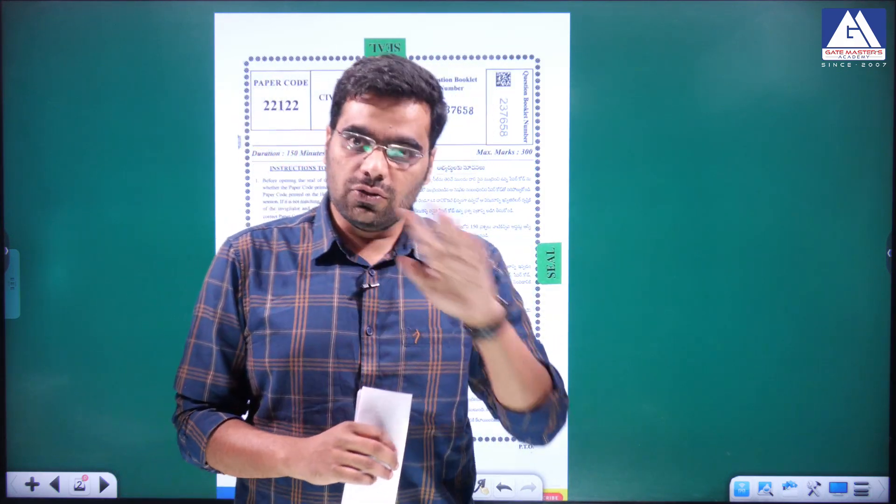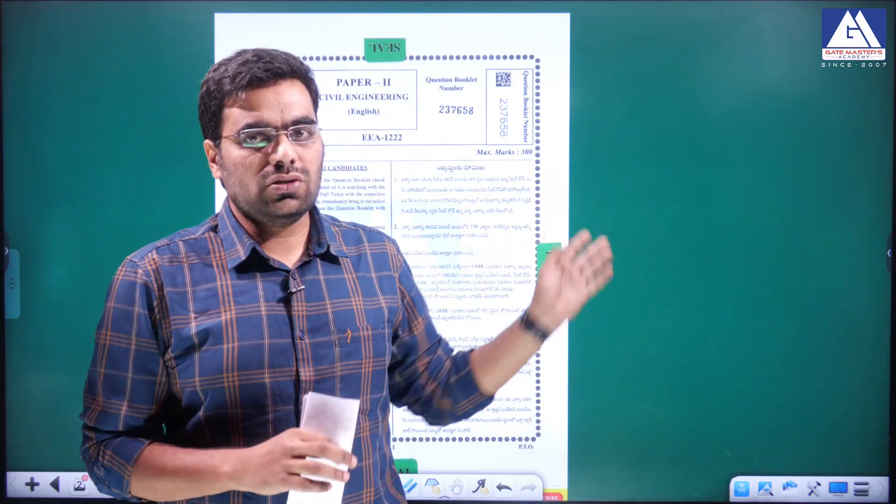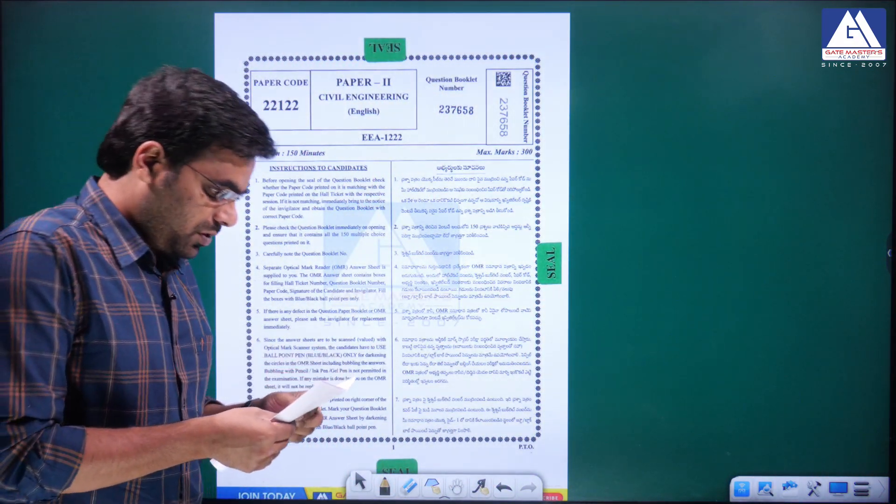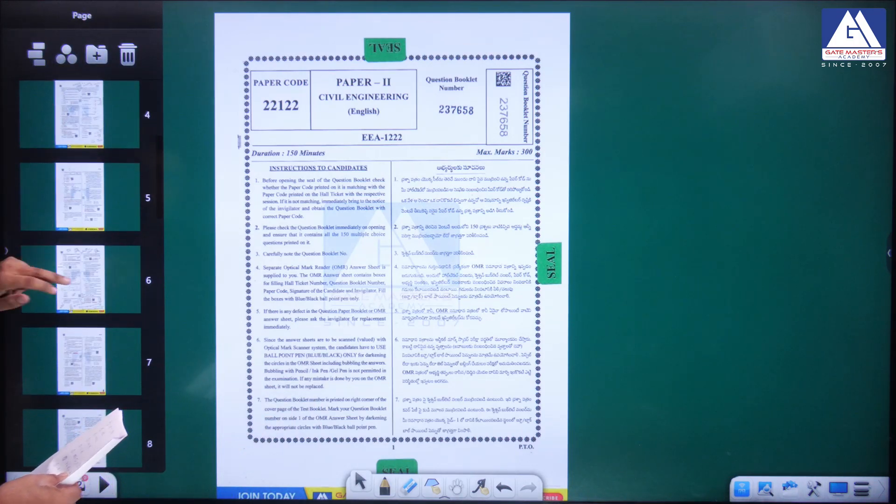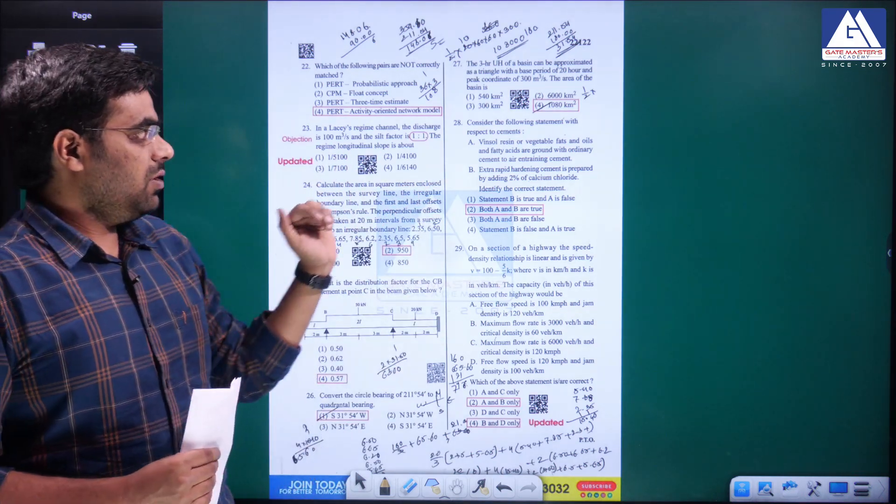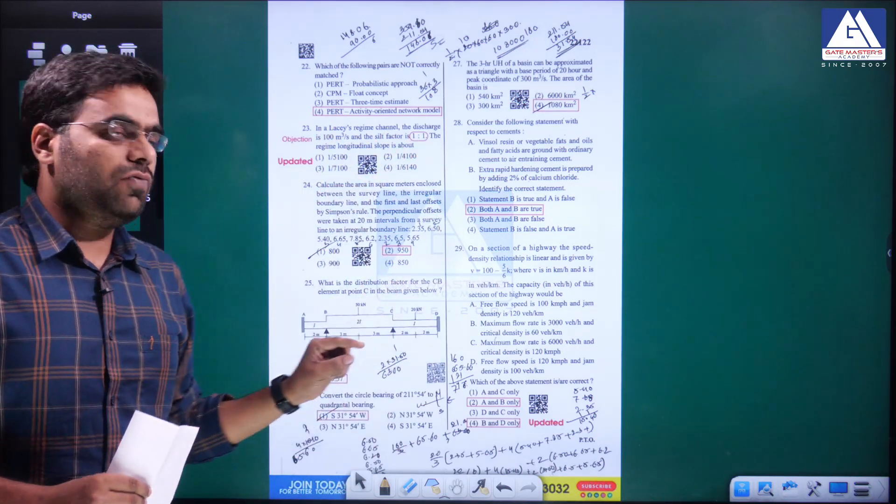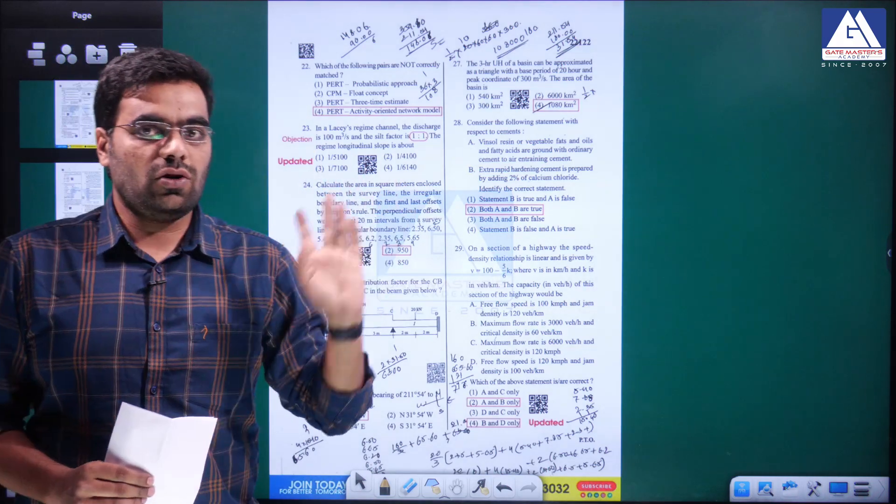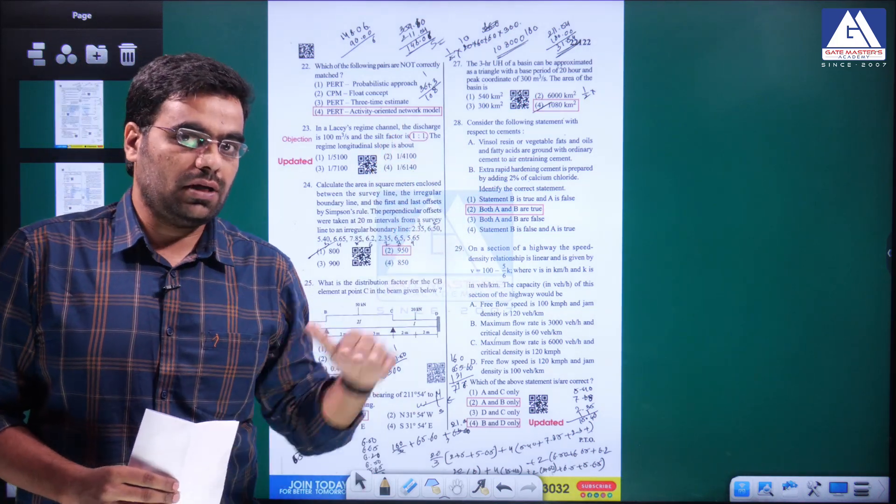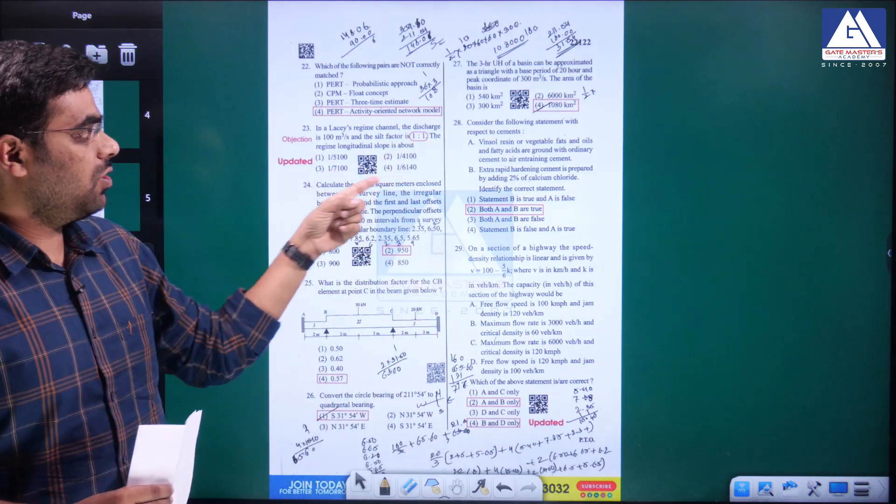Let me directly explain the questions. Starting with this irrigation question about Lacey's regime channel. Here, the answer given is one is to one, but it should be either 1.1 or 1. If you see our answer key, we gave 1:1, but the actual fact is it should be 1.1. You can definitely raise an objection. Why? Because the representation is incorrect - it should be written as 1.1.